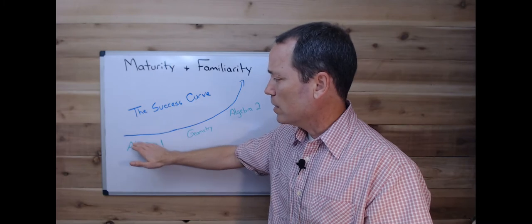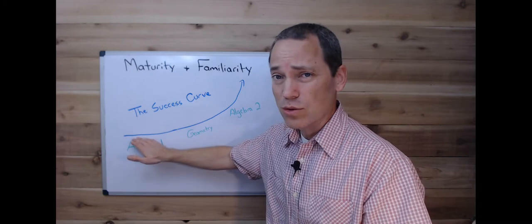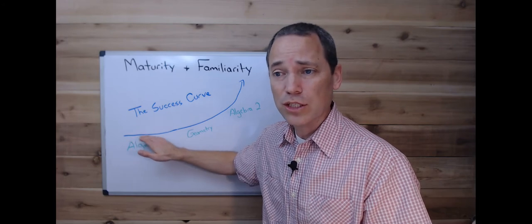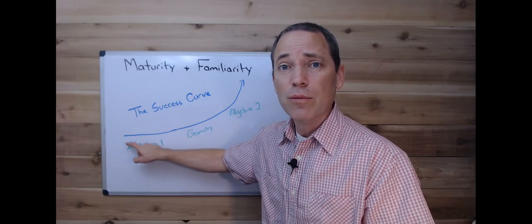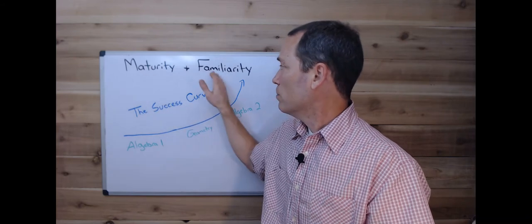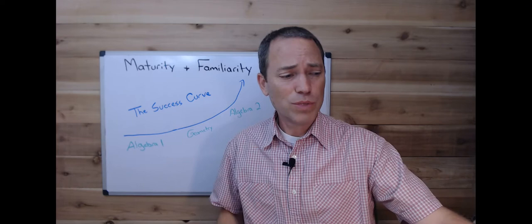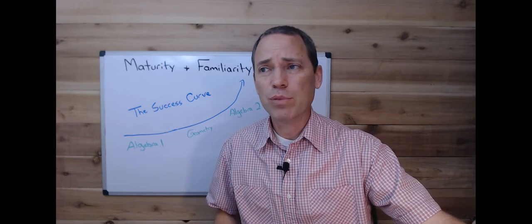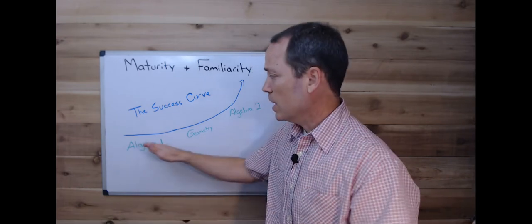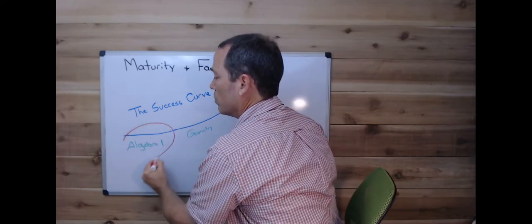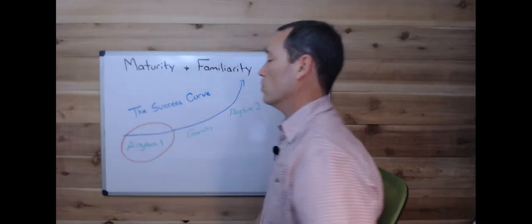They begin in Algebra 1 and the growth can seem very slow. Sometimes it seems like it's not growing at all and it can be painful and challenging trying to get through Algebra 1, but there is growth. Maturing and familiarity are happening. Just don't be so caught up on it's got to happen faster, okay? It is happening, but a lot of students and parents get really bogged down in this Algebra 1 stage.